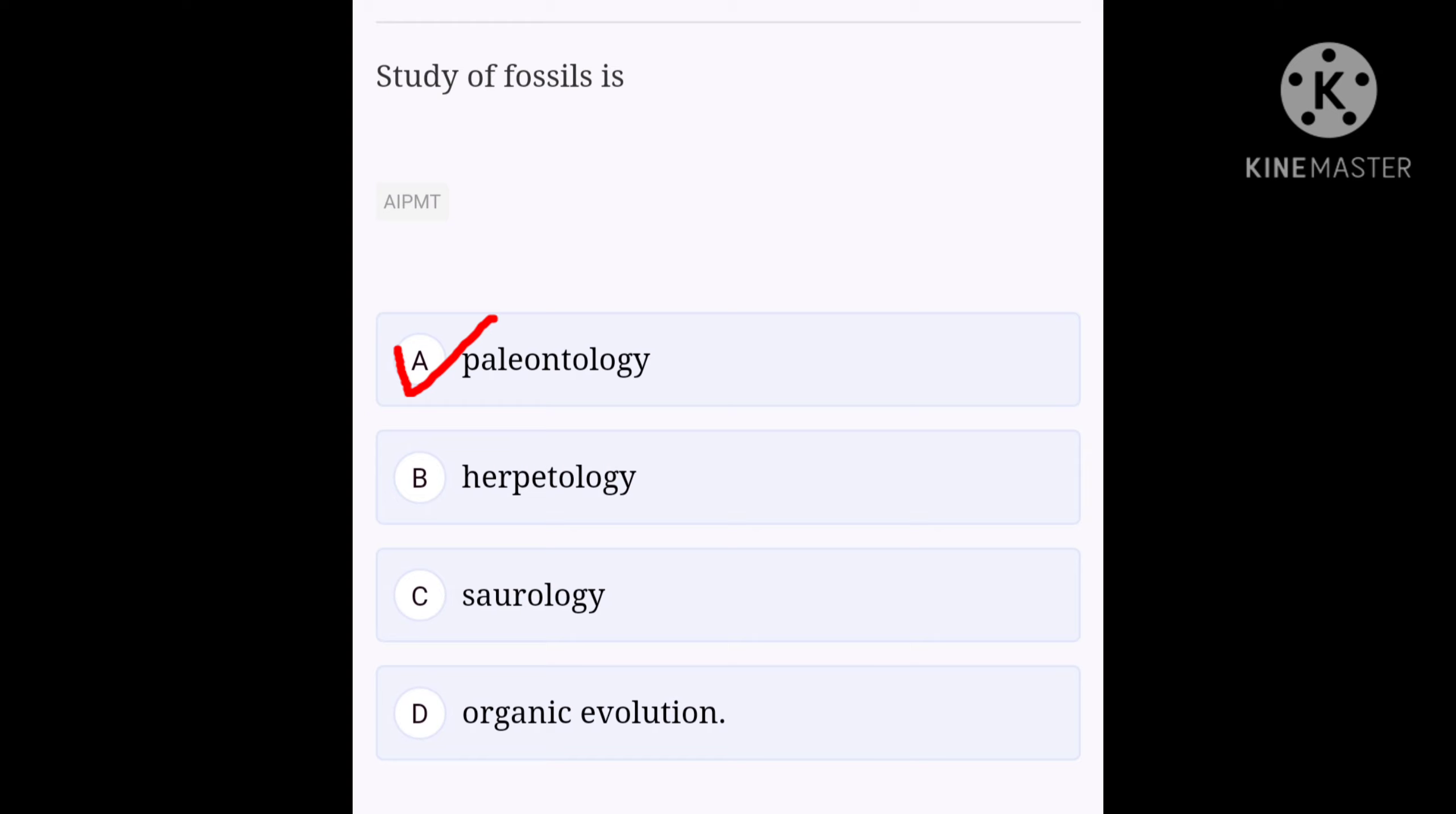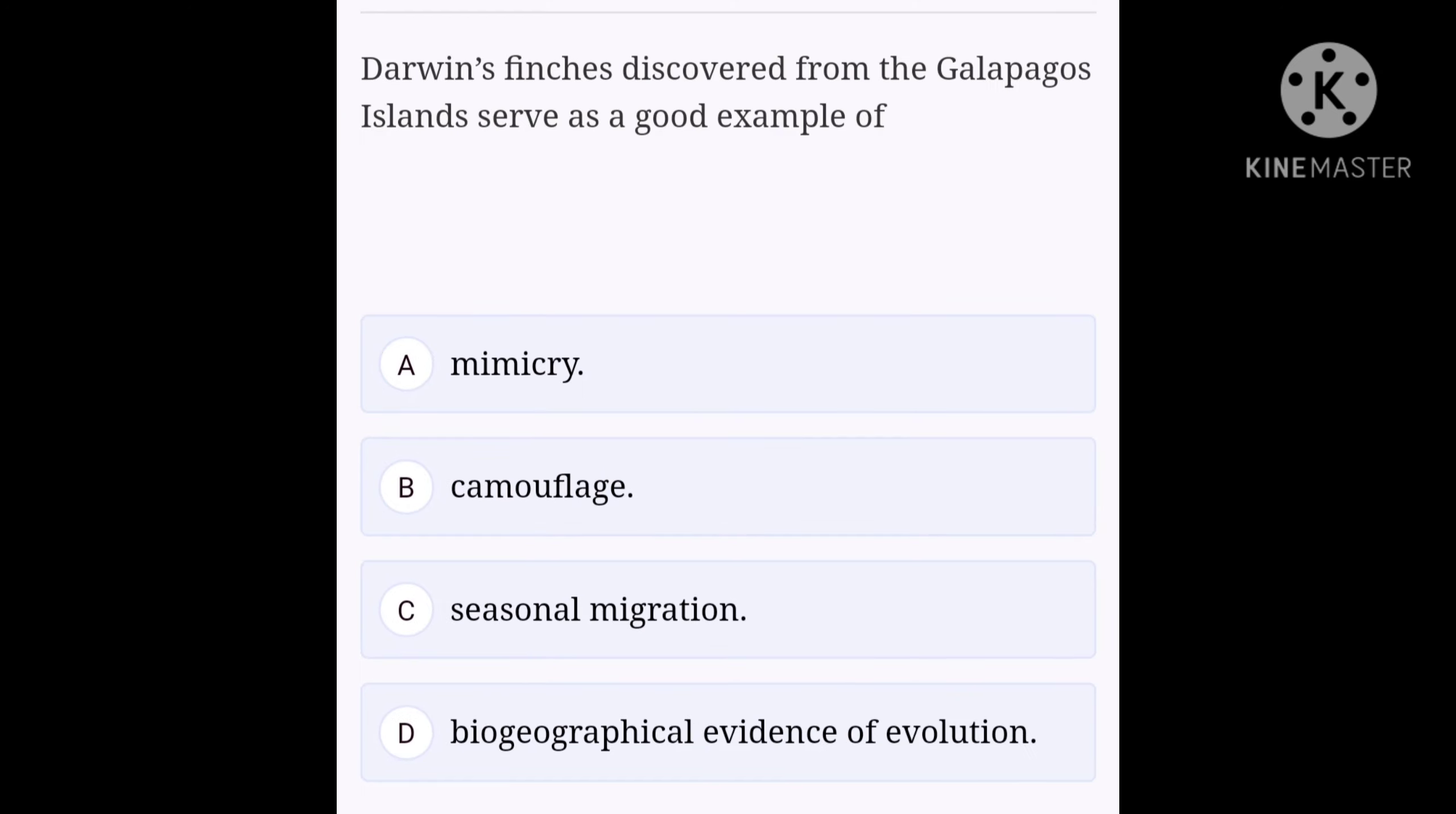Next question. Darwin's finches discovered from the Galapagos Islands serve as a good example of option A: mimicry, option B: camouflage, option C: seasonal migration, option D: biogeographical evidence of evolution.